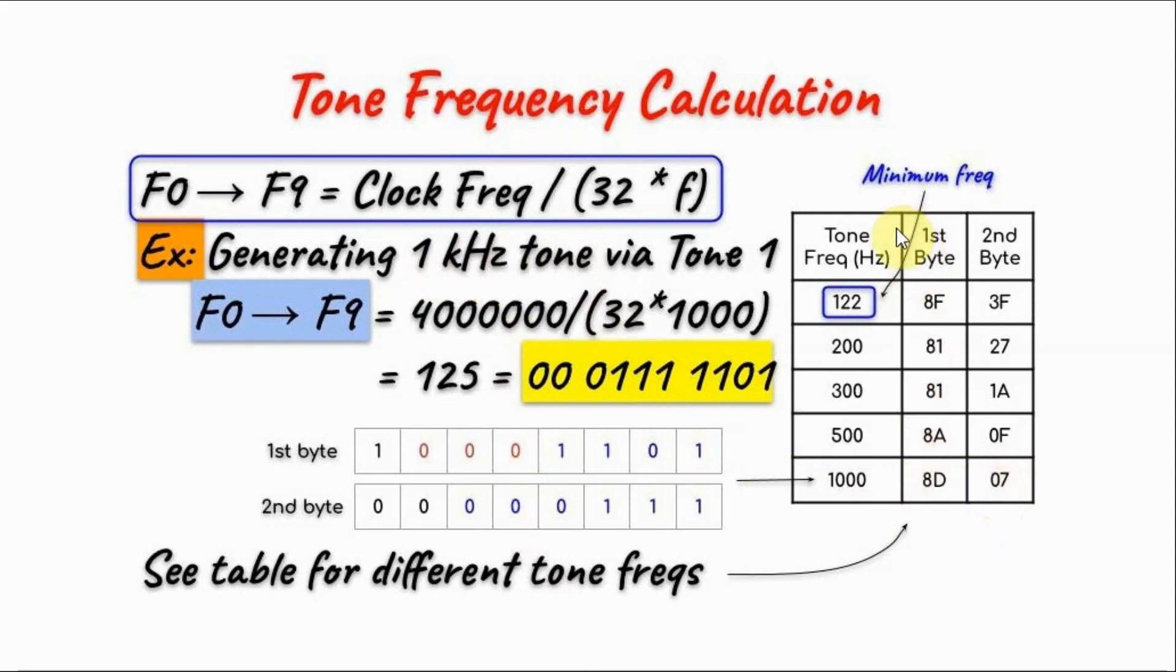This table shows you different tone frequencies, starting with the minimum frequency we can achieve, which is 122 Hz. This value gives us a 10-bit value of all 1s, so this is the minimum.